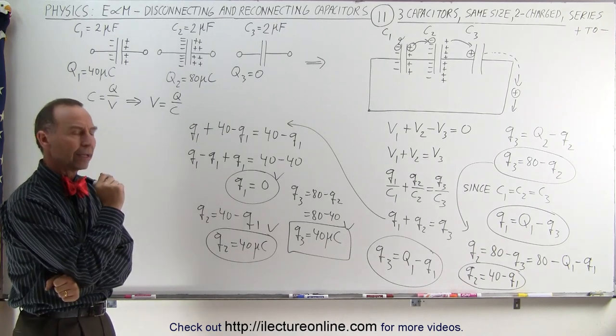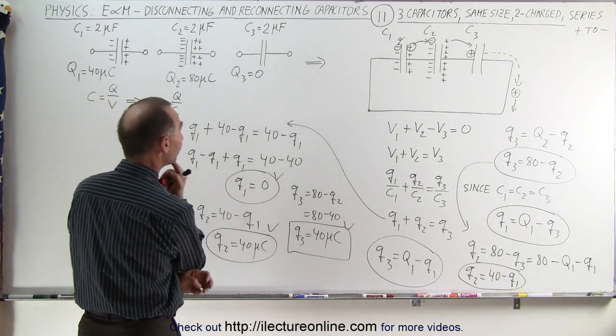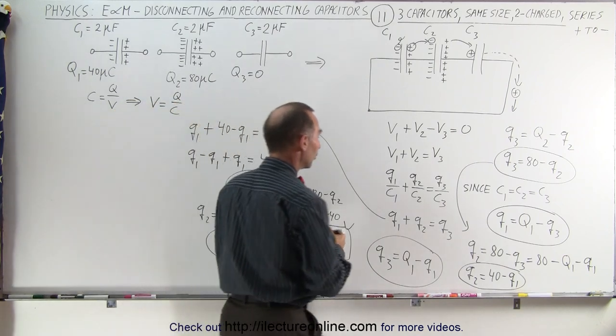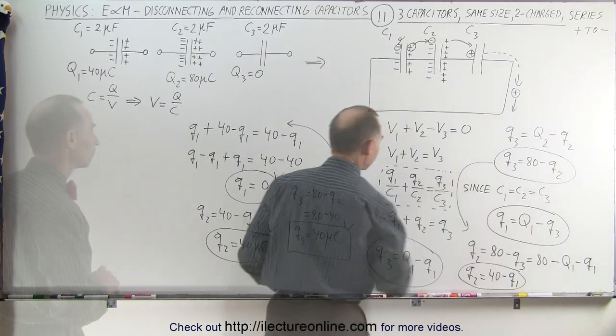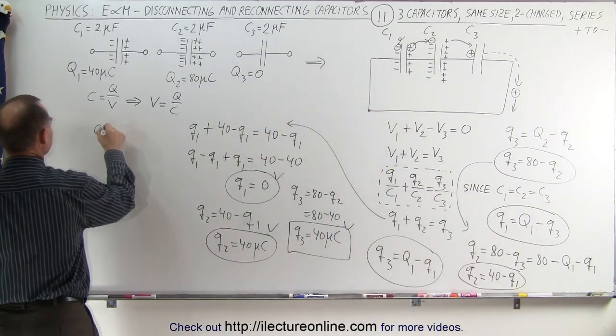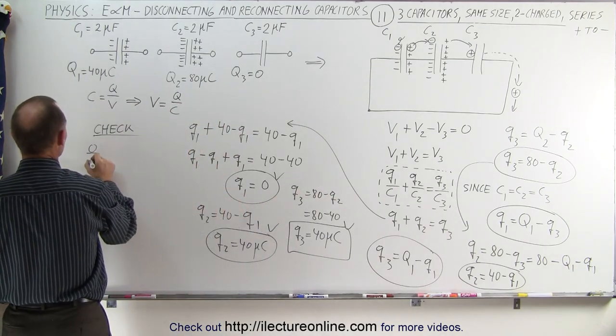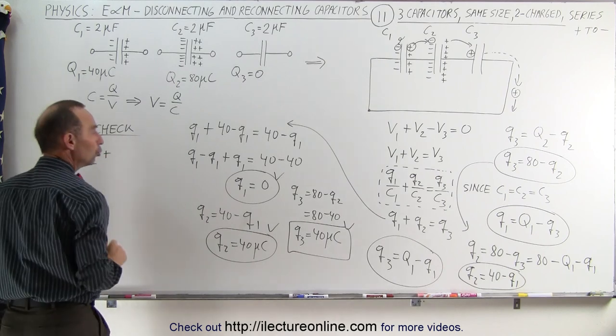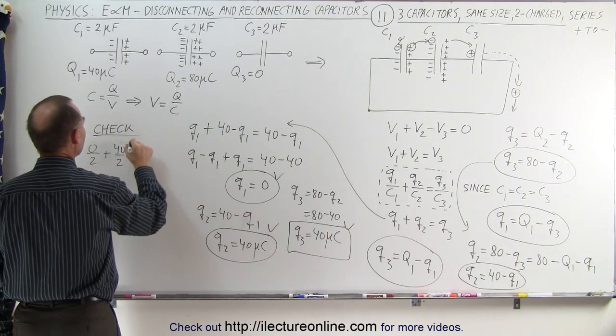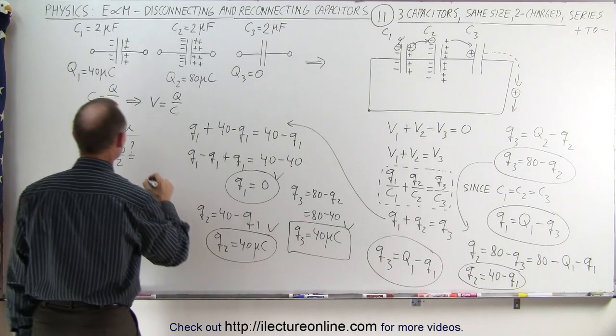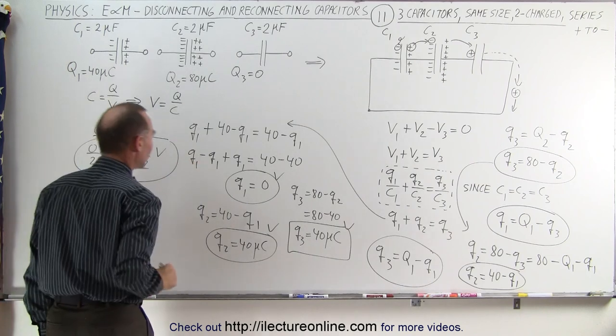Now, how do we know this is correct? Well, we go back to the original equation right here. Is this equation correct? Let's do a check. Q1 divided by C1, so Q1 is zero divided by C1, which is two, plus Q2 divided by C2, which is 40 divided by two. Is that indeed equal to Q3 divided by C3, which is 40 divided by two? And sure enough, by inspection, you can see that that is equal to each other.